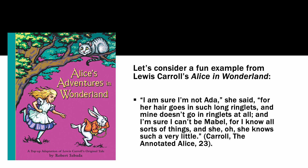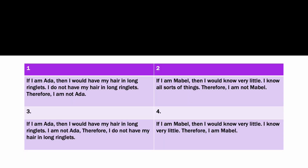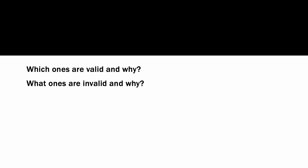Let me conclude with a fun example from Lewis Carroll's Alice in Wonderland. Alice says: 'I am sure I am not Ada, for her hair goes in such long ringlets and mine doesn't go in long ringlets at all. And I'm sure I can't be Mabel, for I know all sorts of things, but she — Mabel — oh, she knows such a very little.' Based on this text, I have devised four different arguments. Please read through them and tell me which ones are valid and why, and which ones are invalid and why.